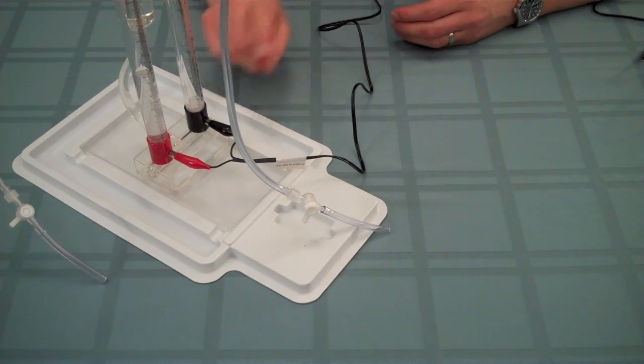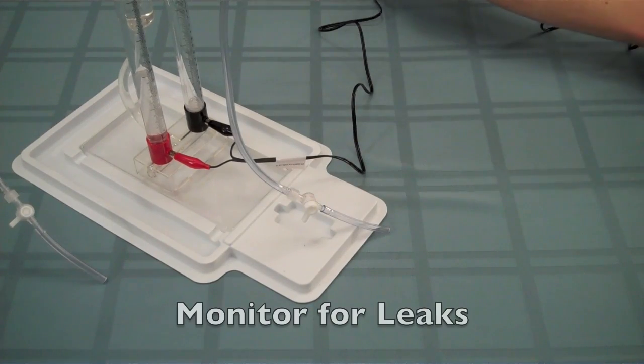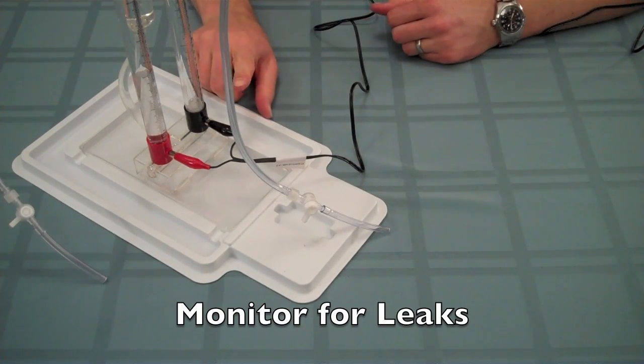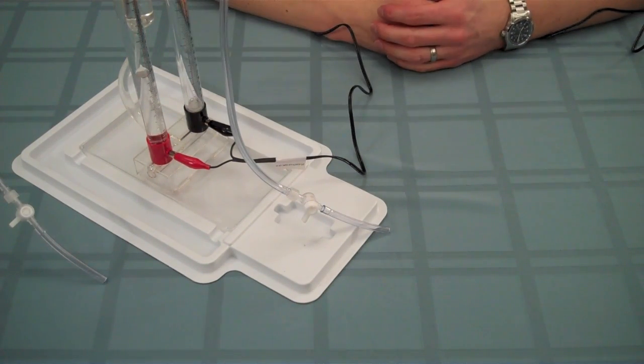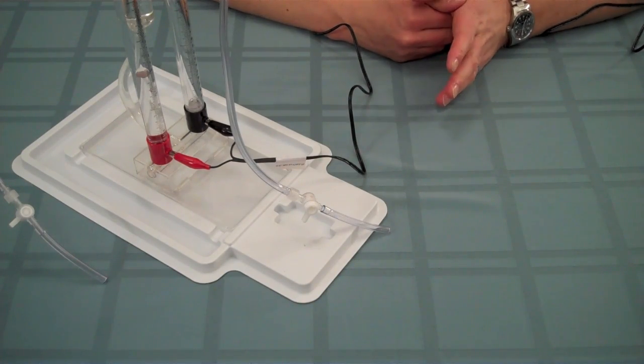When the hydrogen storage column is nearly full, go ahead and unplug the power supply and monitor the level of gases in the storage columns for about one minute. If the level of gas decreases, then there is a leak in the electrolyzer somewhere.